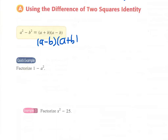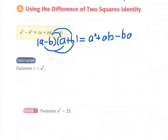This expression can be easily proved by expanding the right-hand side. We get a squared plus ab minus ab minus b squared. We cross out the two middle terms — ab and minus ab — they cancel out each other, and we come up with a squared minus b squared, which equals the right-hand side.